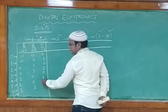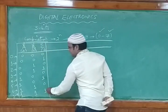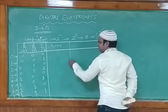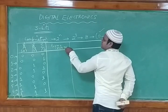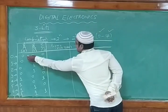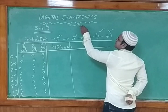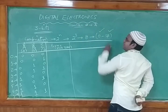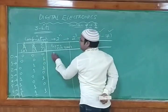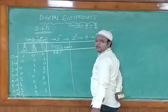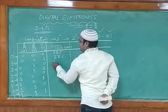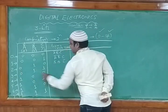For minterm: digit 0 (000) → āb̄c̄, digit 1 (001) → āb̄c, digit 2 (010) → ābc̄, digit 3 (011) → ābc. Continuing: digit 4 (100) → ab̄c̄, digit 5 (101) → ab̄c, digit 6 (110) → abc̄, digit 7 (111) → abc. These are labeled m0 through m7, and collectively written as sigma(m0, m1, m2, m3, m4, m5, m6, m7).